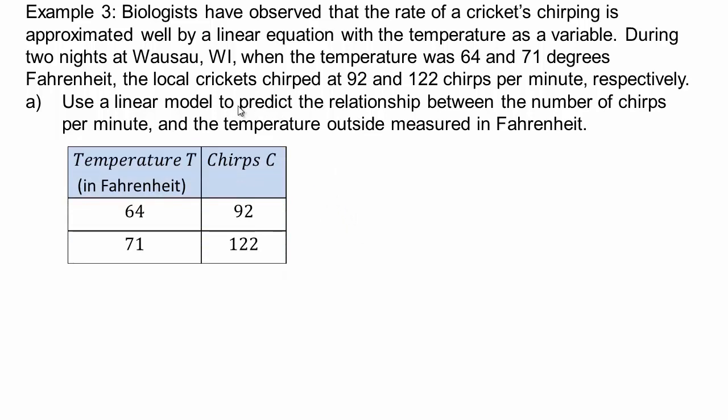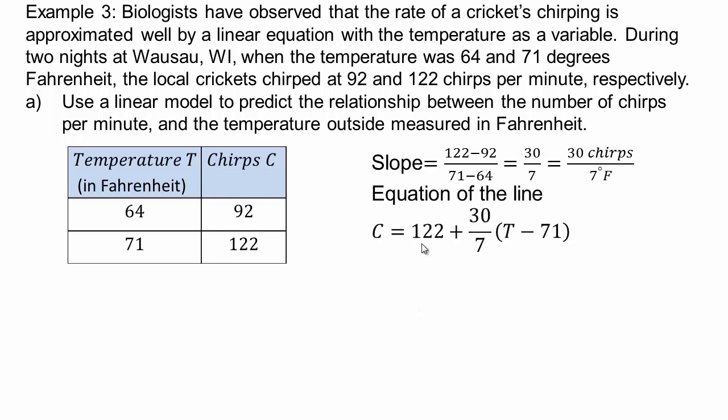And so in order to do linear model, that means what? We are using slope. So let's find the slope. The number of chirps, 122 minus 92 divided by the temperature difference, 71 minus 64. So that's 30 chirps for every 7 degree Fahrenheit change in the temperature. All right, so equation of the line then would be 122 chirps plus 30 over 7 times the temperature difference over 71 degrees. All right, let's take a look then what happens.